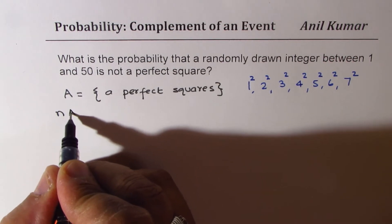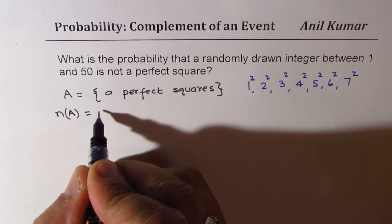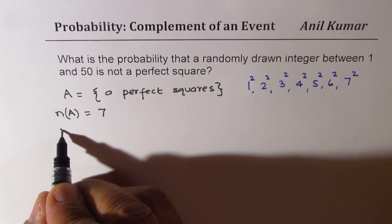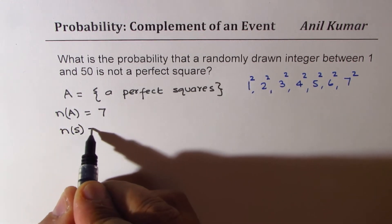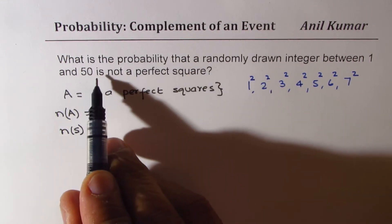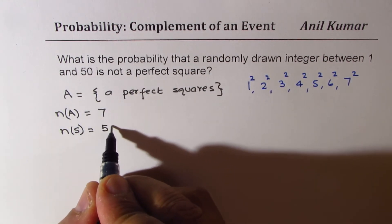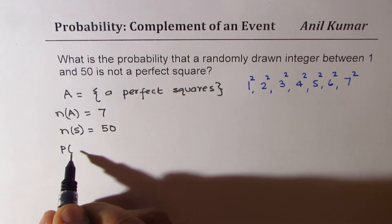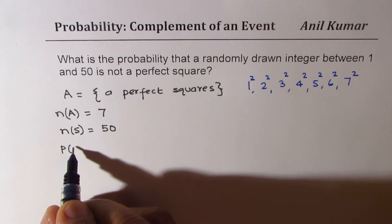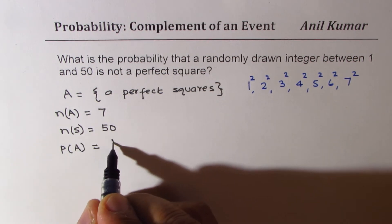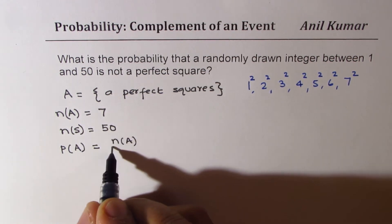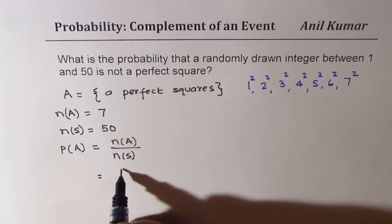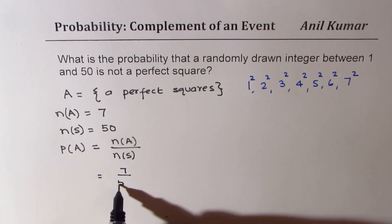So n(A) will be equal to 7. Now in the sample space, what we have is 1 to 50, both included, so we have 50 numbers. The probability of picking up a perfect square will be n(A) divided by n(S), which is 7 over 50.